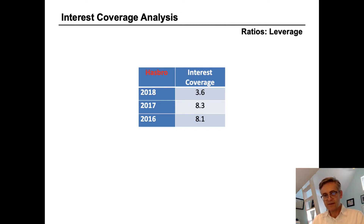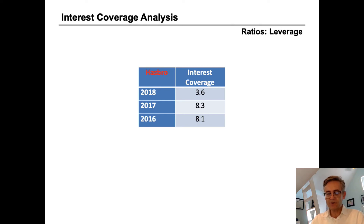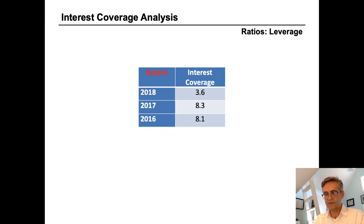Now 3.6 times interest coverage is still probably acceptable, and certainly there will be some lenders who will be less inclined to lend money to Hasbro today than they were in the past. But clearly the coverage needs to be greater than one, and interest coverage ratios lower than two could be problematic, especially if there's any inconsistency in the earnings. Many lenders will not lend to companies below two. Right now Hasbro is probably still okay, but they need to show that they can increase their earnings or pay down some of their debt over the long term.